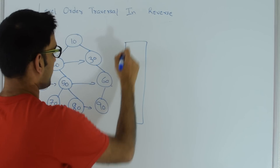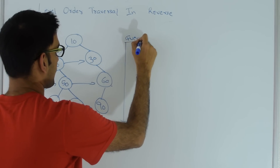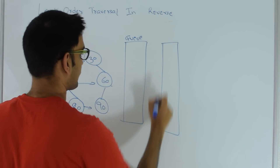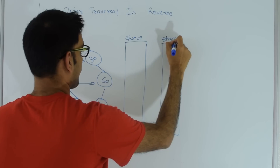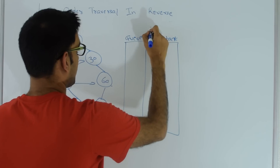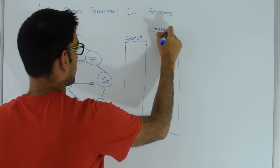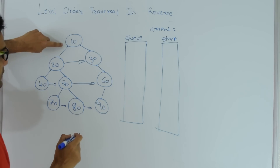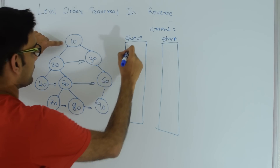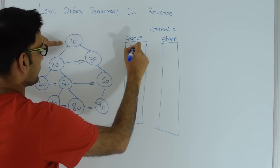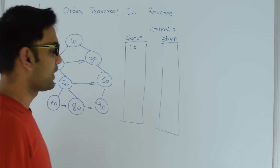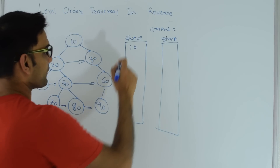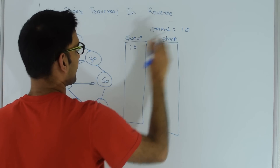So this is my queue and this is my stack, and my current is null right now. First I put my root into my queue, then I go into a while loop while the queue is not empty. I pop from the queue so current becomes 10.